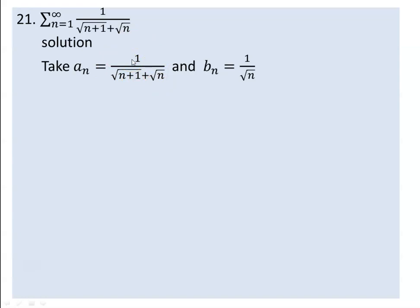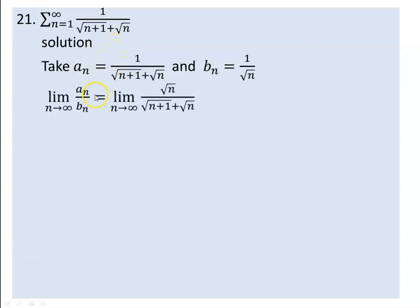The limit of the ratio of the two — a_n and b_n — must be determined. The limit of a_n over b_n comes as you see. The limit of a_n over b_n must be ascertained.